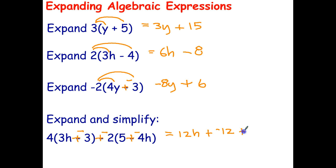Plus negative 2 times 5 is negative 10, plus negative 2 times negative 4h. Well, negative 2 times negative 4 is positive 8 times h. So, plus 8h.